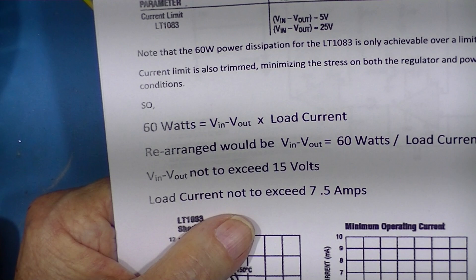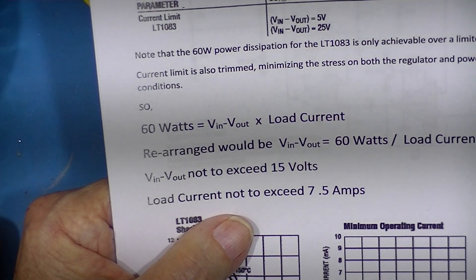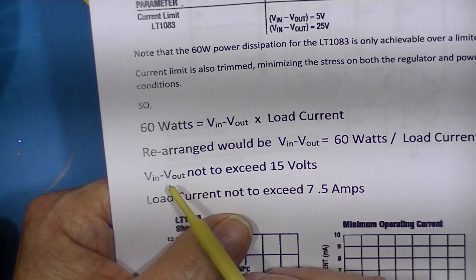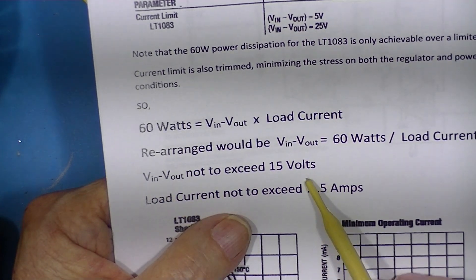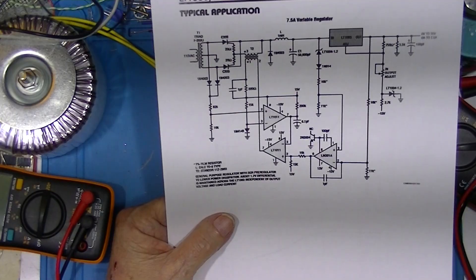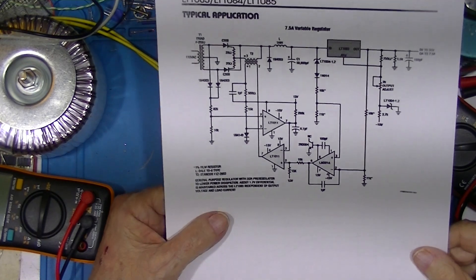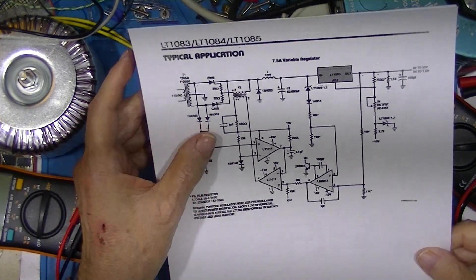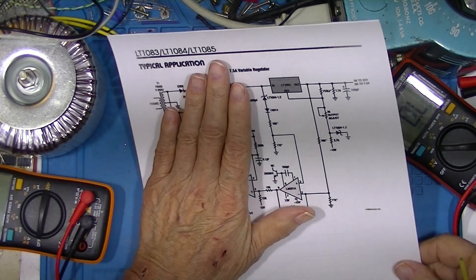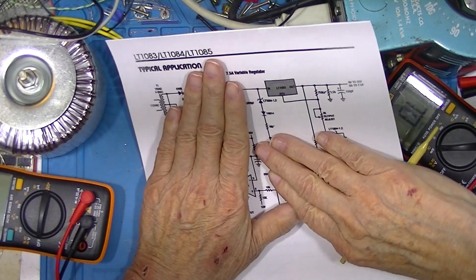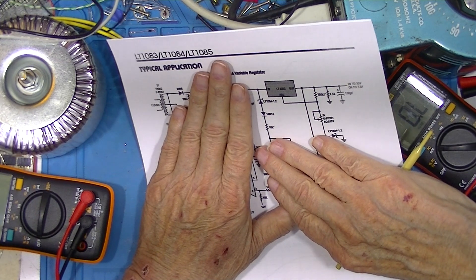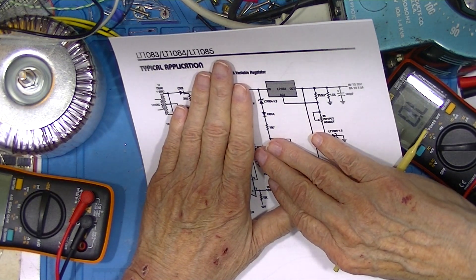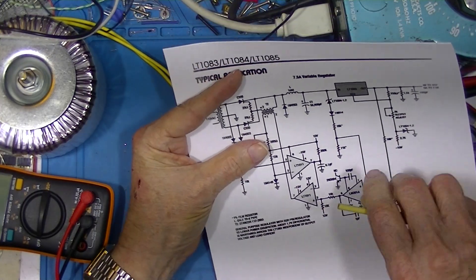So how do you make a zero to 30 volt power supply if we can never have a V_in minus V_out condition that exceeds 15 volts? Well, Linear Technology's come up with a really sweet little design. If we just look at what's here, that's a standard three-terminal regulator layout. This over here...